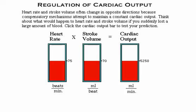Heart rate and stroke volume often change in opposite directions because compensatory mechanisms attempt to maintain a constant cardiac output. Think about what would happen to heart rate and stroke volume if you suddenly lost a large amount of blood.